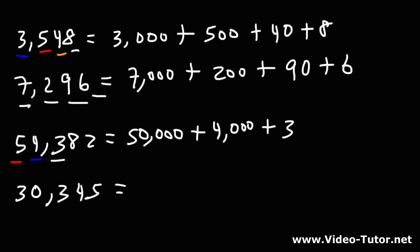And then the 3 is in the hundreds place, so plus 300. And then the 8 is in the tens place. 8 times 10 is 80. The 2 is in the ones place, so 2 times 1 is 2. So 54,382 is 50,000 plus 4,000 plus 300 plus 80 plus 2.